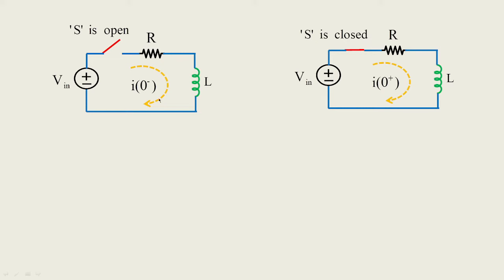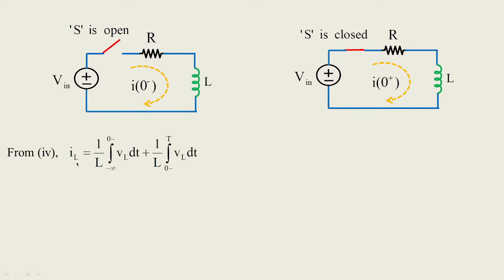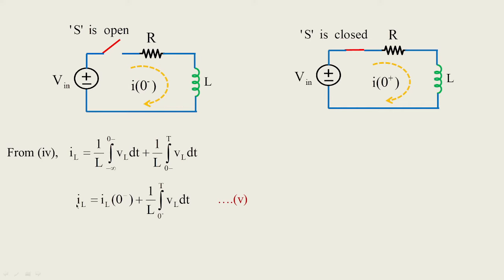When the circuit is open this is how it looks, and when closed these are the conditions — before and after. The inductor behavior is obtained from this analysis. The equation for iL is: iL = (1/L) ∫ from −∞ to 0− of vL dt + (1/L) ∫ from 0− to t of vL dt. Before the switch was closed, the inductor and resistor were not connected to the source, so the past history from −∞ to 0− is treated as iL(0−).